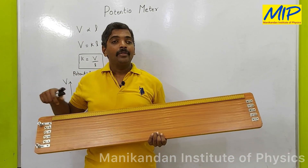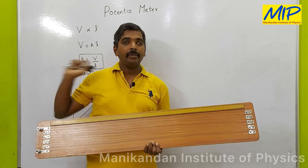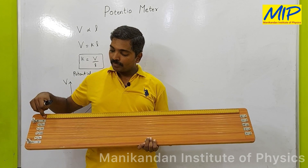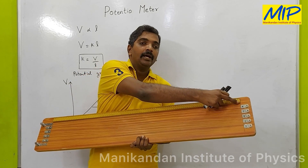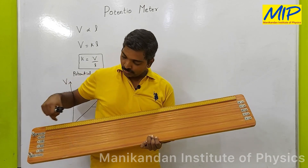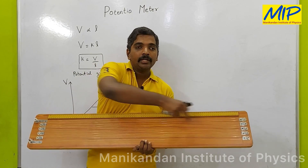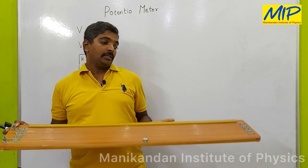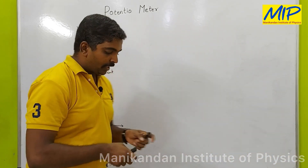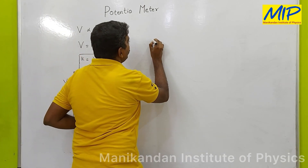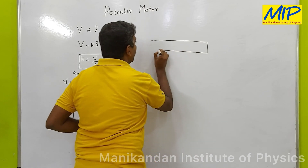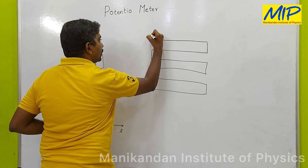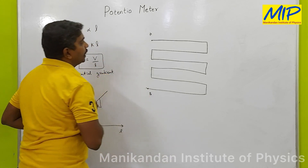The meter bridge is a wire of 10 meters. From point A to point B it is 1 meter, starting from 0 to 100. The second line goes from 100 to 200, the third from 200 to 300, and so on — 10 lines in total. So the total length of this wire is 10 meters or 1000 centimeters.